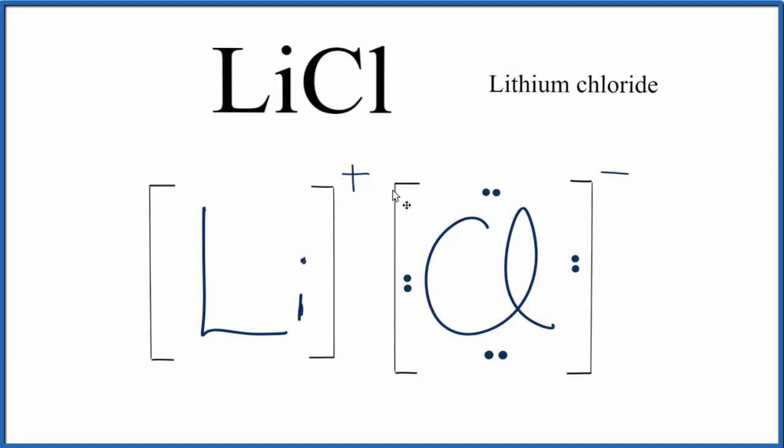So now we have lithium with a positive charge, the lithium cation, and then the anion, the chloride anion, with a negative. Positives and negatives attract, and that's what forms the ionic bond.